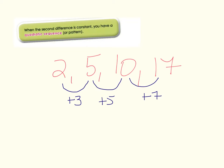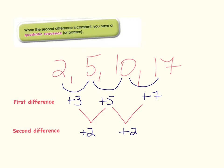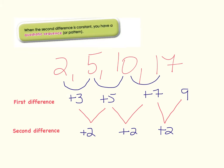What if we look at the second difference? The difference between 3 and 5 is plus 2, and the difference between 5 and 7 is also plus 2. This is what we refer to as a quadratic sequence — a quadratic sequence is when you have the same second difference. To find the next number, the difference from 7 must increase by plus 2, giving 9. So 17 plus 9 gives us 26.